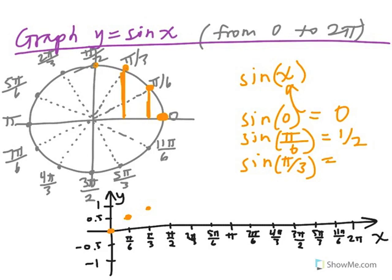Now, we can see for pi over two, sine of pi over two is just one. So, for pi over two, we go up here to one, and we plot that point.